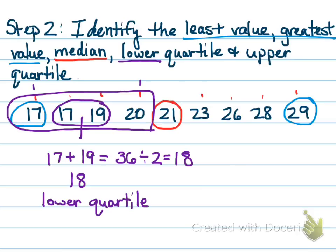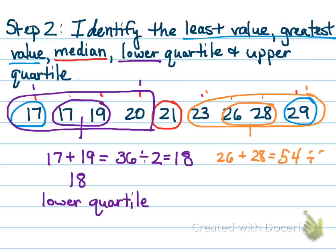I'm going to do the same thing for the upper quartile. I'm going to look at the numbers that are larger than my median. I'm going to count into the middle. I find that again, I have two numbers in the middle. So I'm going to add those and divide by two. Gives me 27. And that's my upper quartile.